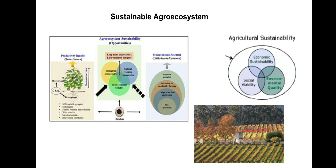A sustainable agroecosystem is environmentally sound, economically viable, and socially just. It meets the needs of the present without compromising the ability of future generations to meet their own needs. It maintains the resource base on which it depends, relies on a minimum of artificial inputs, and manages pests and diseases through internal regulating mechanisms.